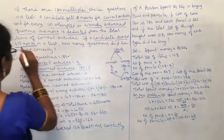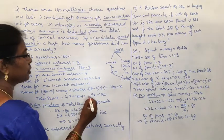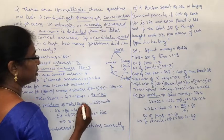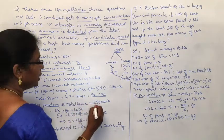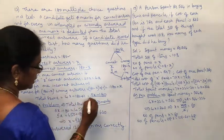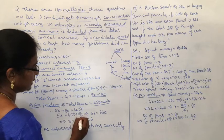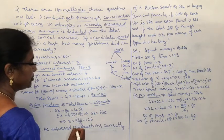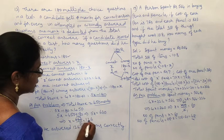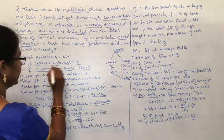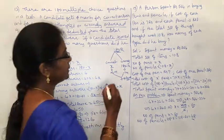As per the problem, the candidate scored 450 marks. So we equate: 5x minus 180 equals 450. Therefore 5x equals 450 plus 180, which is 630. So x equals 630 divided by 5, which equals 126. Since x represents correct answers, the candidate answered 126 questions correctly.